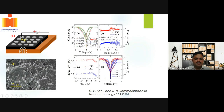This is the kind of device that we have developed in our laboratory. Graphene oxide is the active material. The bottom electrode is FTO and the top electrode is silver. This is the kind of IV characteristics that we have obtained.